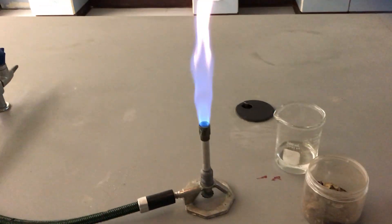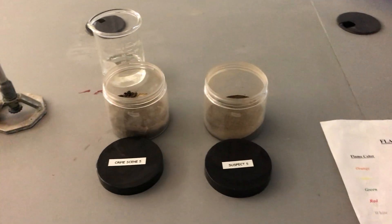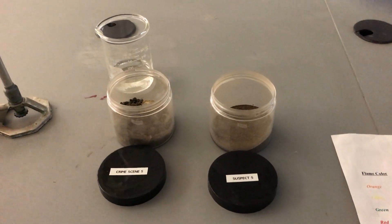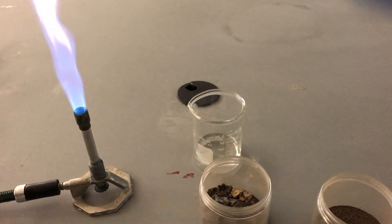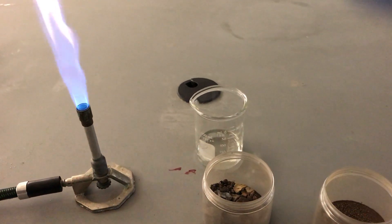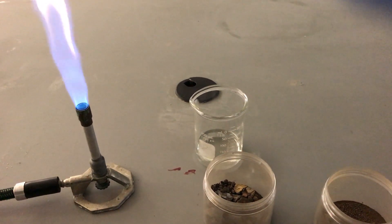So what we see here, we have our Bunsen burner already lit. We have our two soil samples, crime scene and suspect, and at the back there we have a little beaker of nitric acid for essentially decontaminating our sampling equipment.